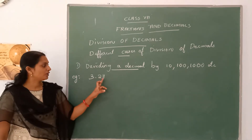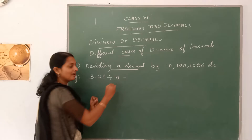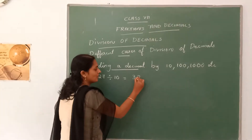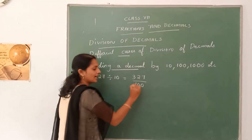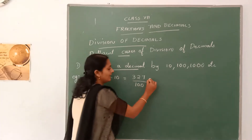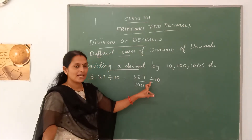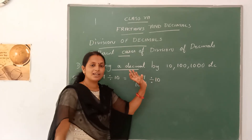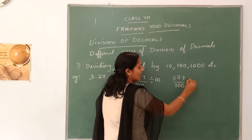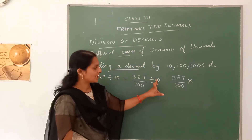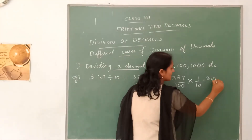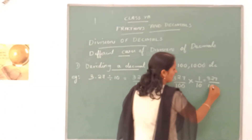One example: 3.27 divided by 10. The fractional form of 3.27 is 327 divided by 100, since there are two digits after the decimal. When we divide a fraction by a whole number, we find the reciprocal of the divisor. So 327/100 multiplied by the reciprocal of 10, which is 1/10, equals 327 divided by 1000.